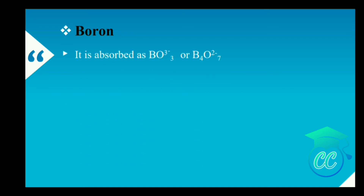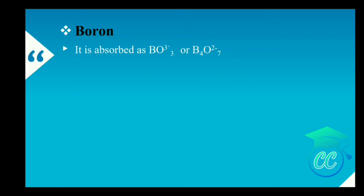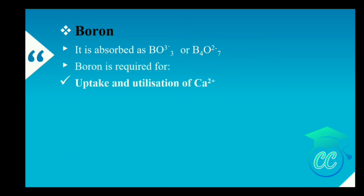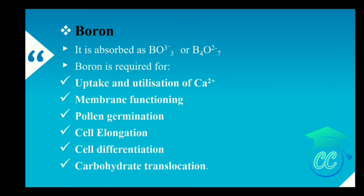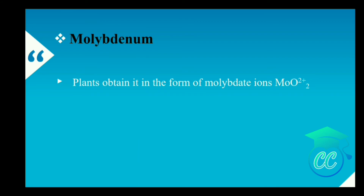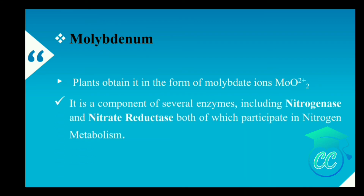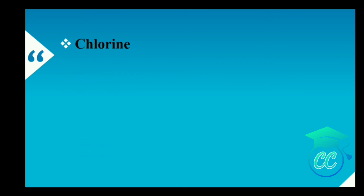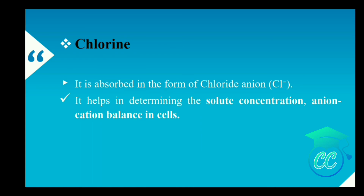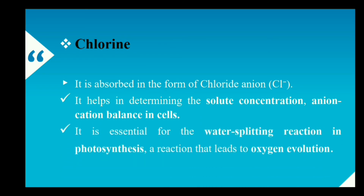Next, boron. Boron is absorbed by plants in the form of borate ions. Its roles include uptake and utilization of calcium ions, membrane function, pollen germination, cell elongation, cell differentiation and carbohydrate translocation. Next, molybdenum. Plants absorb molybdenum in the form of molybdate ions. Molybdenum is an essential component of several enzymes including nitrogenase and nitrate reductase, both of which participate in nitrogen metabolism. Finally, chlorine. Chlorine is absorbed in the form of chloride anions. It helps in determining the solute concentration and anion-cation balance in the cell, and also plays a role in the water-splitting reaction in photosynthesis which leads to oxygen evolution.